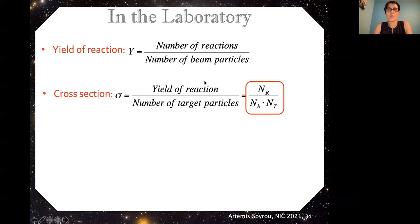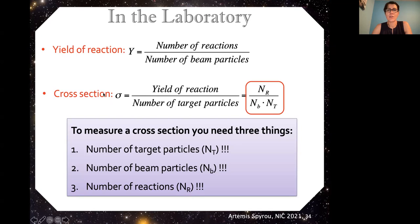So moving on to how we do these measurements. I showed this slide already saying that the cross section, in order to measure the cross section, we need to know basically three things: the number of target particles, the number of beam particles, and the number of reactions that happen. So I'll go through different examples of this. Of course there are special cases and I won't cover everything, but kind of the general idea of how you measure these things.